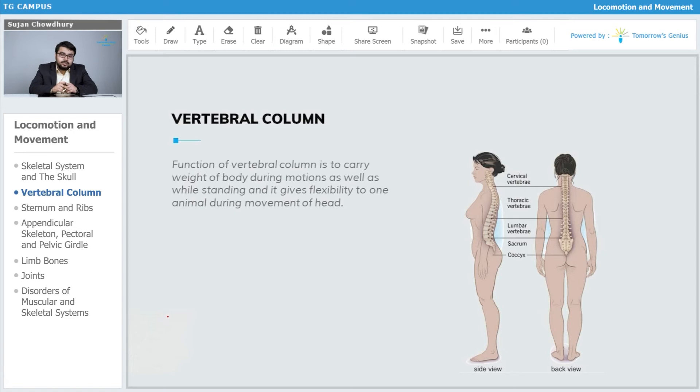Let us continue to understand more about the vertebral column. The function of the vertebral column is to carry the weight of the body during motions as well as while standing, and it gives flexibility to an animal during movement of the head.